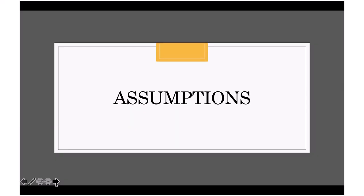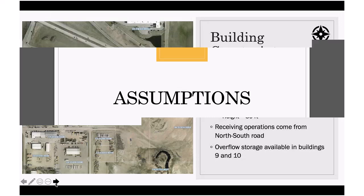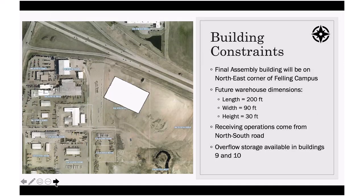Here are our assumptions. The first lies in building constraints. The warehouse, which sits within the final assembly and paint building, is constrained to the northeast corner of Felling Campus, as you can see by the large white rectangle. Our future warehouse dimensions are 200 feet by 90 feet by 30 feet high. Receiving operations will come in from a north-south road, which dictates where our garage doors will be. In addition, overflow storage is available in buildings 9 and 10, which is a great safety net.